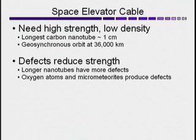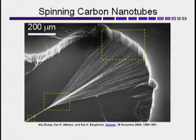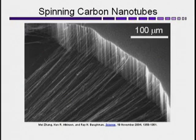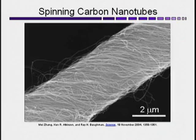Progress has been made spinning carbon nanotubes into yarn. Here we see a forest of carbon nanotubes at the right being pulled off into a fiber. As those fibers are pulled off and spun, you can create a carbon nanotube yarn.